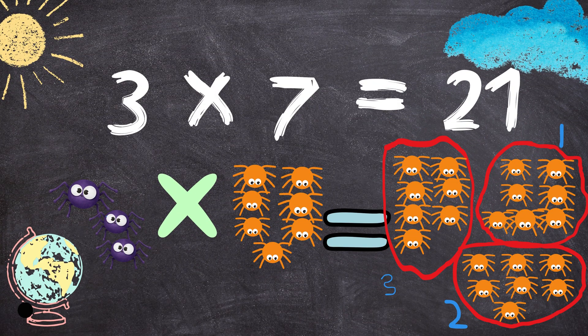Three times six equals to twenty-one. Three spiders multiplied by seven spiders will give you twenty-one spiders.